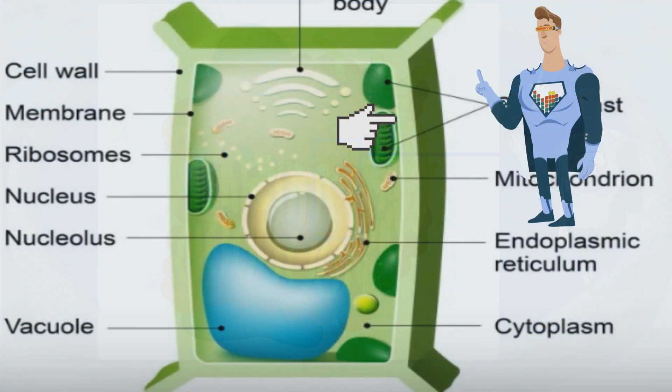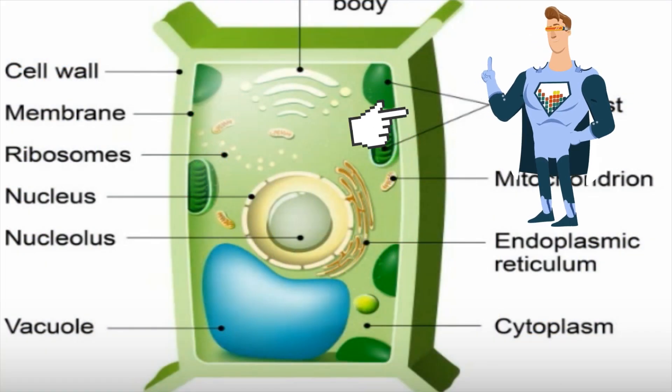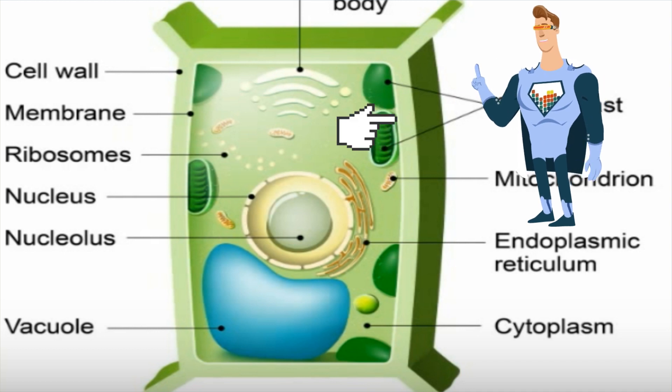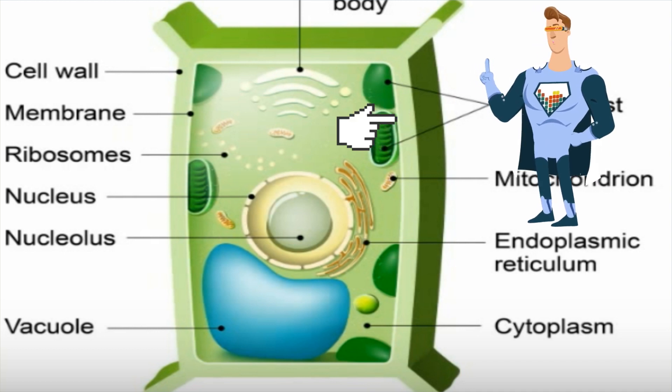A plant cell has extra protection from the cell wall. It gives plants a rigid structure and support.